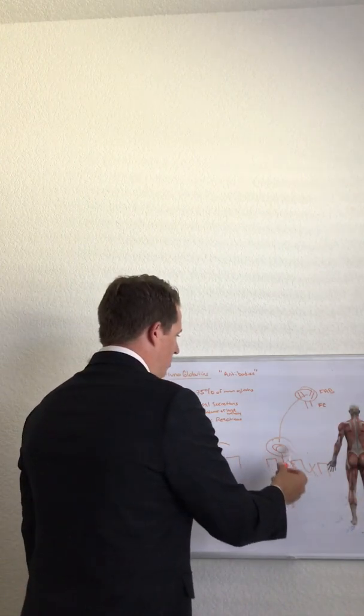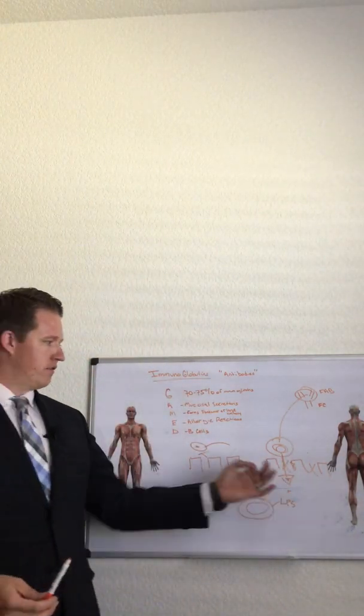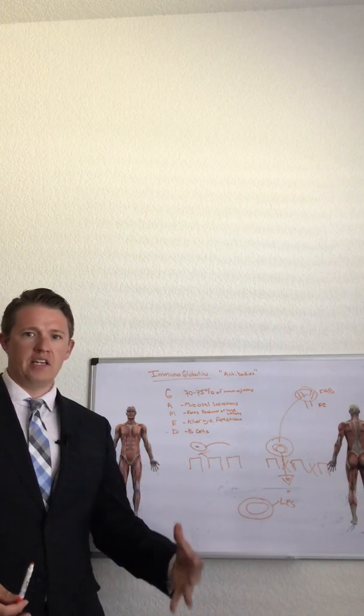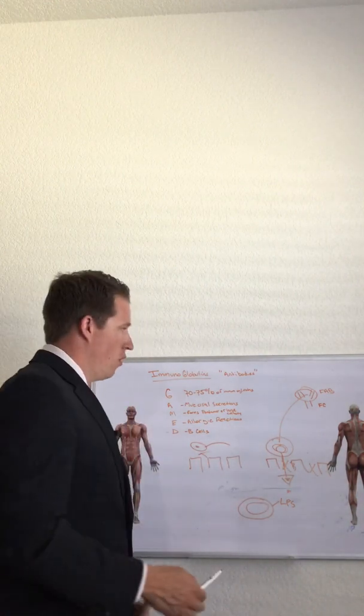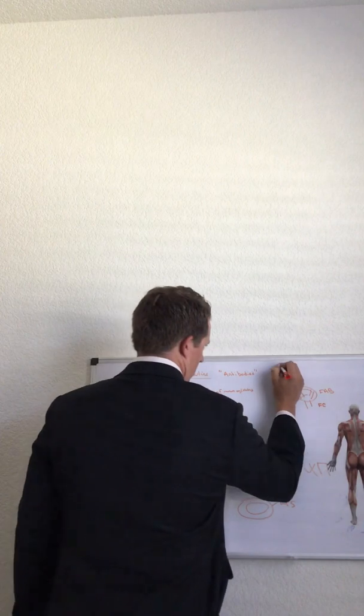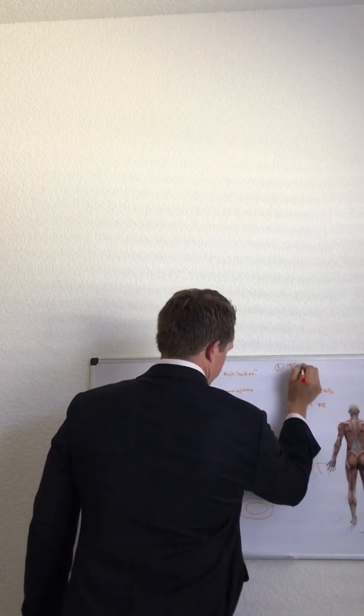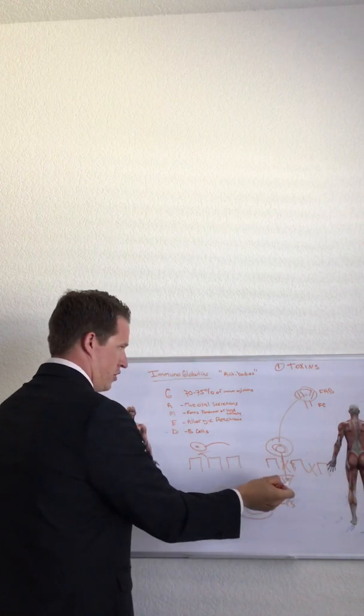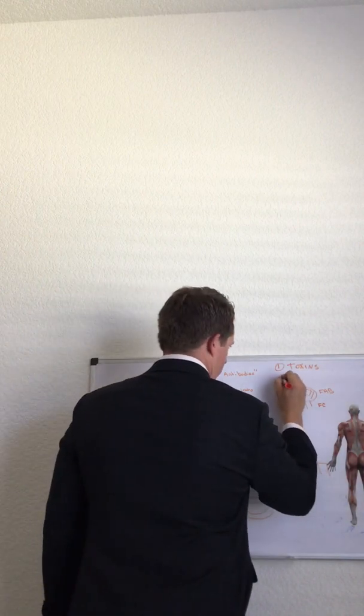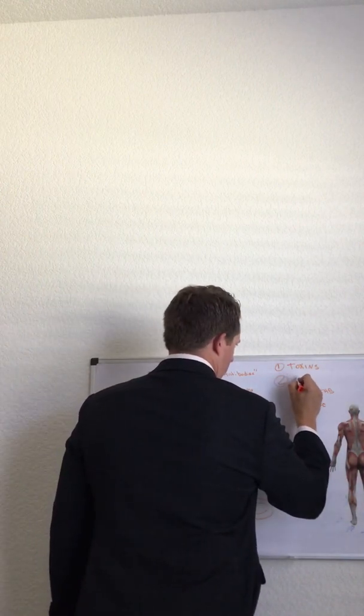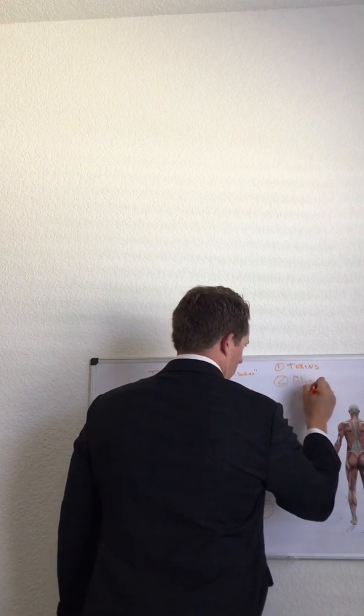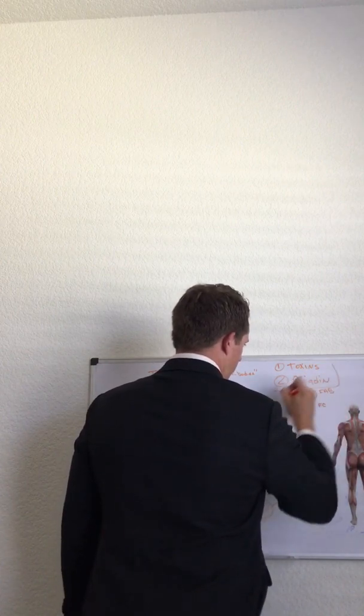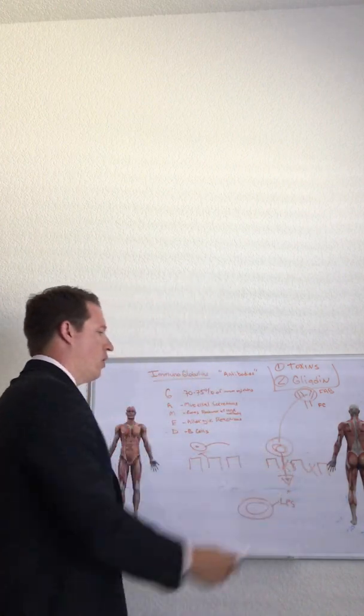Now there's been a couple of different potential triggers of this complex right through here called leaky gut or intestinal permeability. One is toxins like LPS, which we just showed here. Two is there's been a protein in gluten called gliadin that have been shown to open up the cell walls.